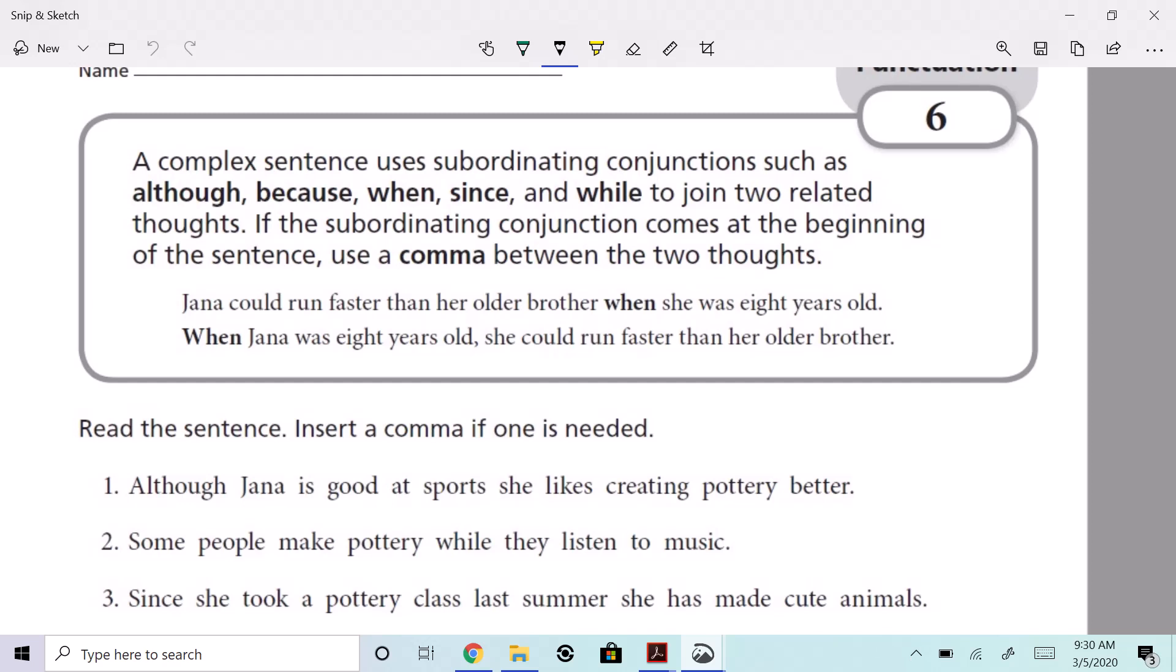It's important. We need something else, right? So we need the rest of the sentence there. It comes at the beginning of the sentence. We need a comma between the two thoughts. So let's look at this example. It says, 'Janna could run faster than her older brother.' I can't just put a period there, can I? No. We need to finish it. Comma.